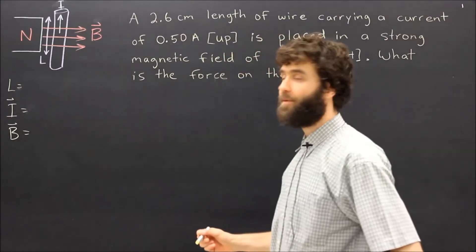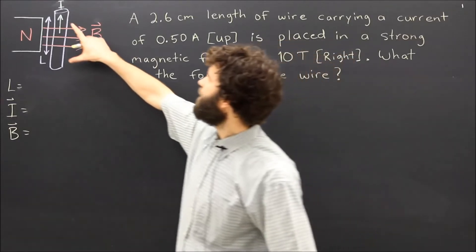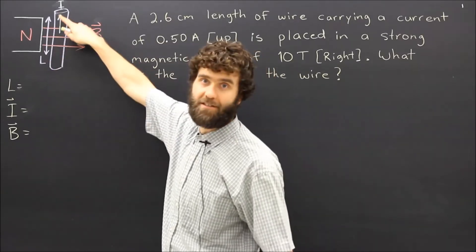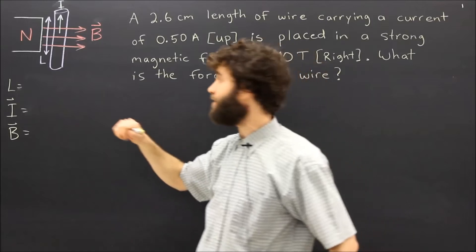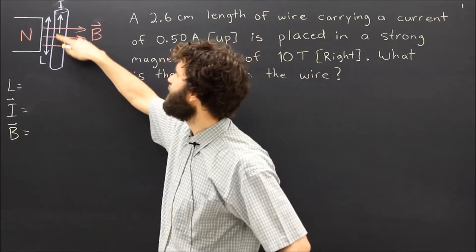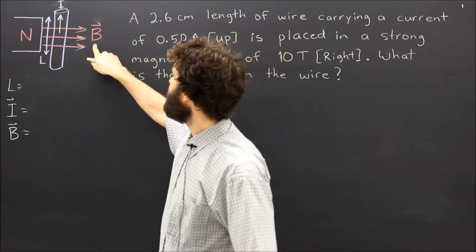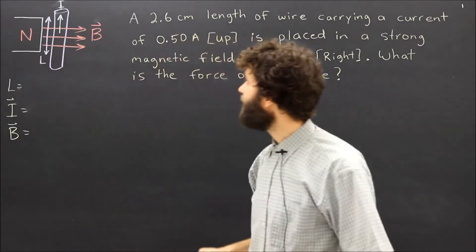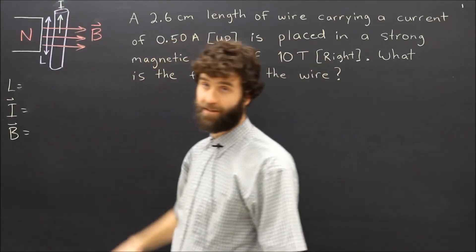We have a simple formula that tells us how to calculate that force given the length of the conductor that's exposed to that field, called L. Notice it's not the full length of the entire conductor carrying the current, but only the part that's in the perpendicular magnetic field. We have a magnetic field of strength B exposed to that wire, and that wire is carrying a current I. Those are the three variables that are important.